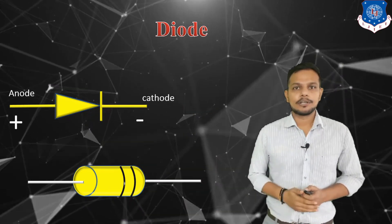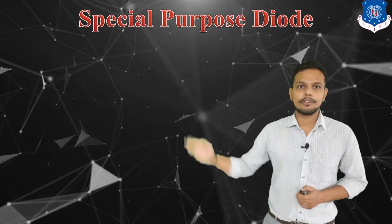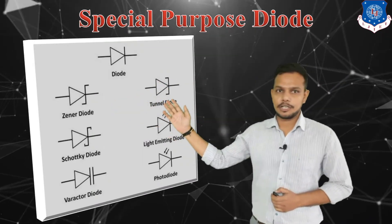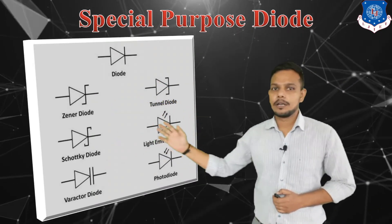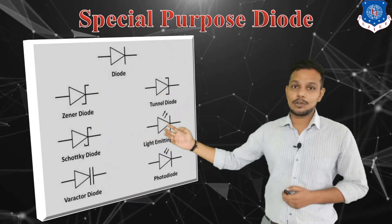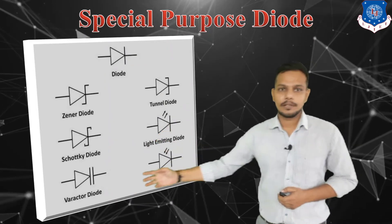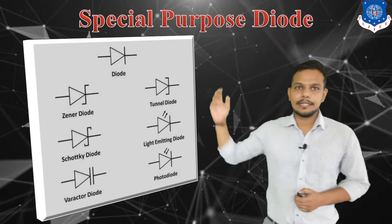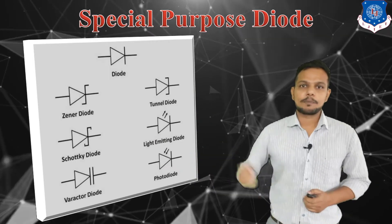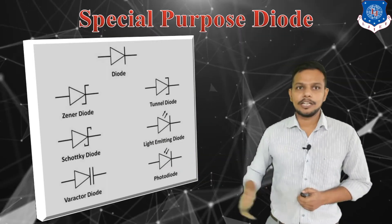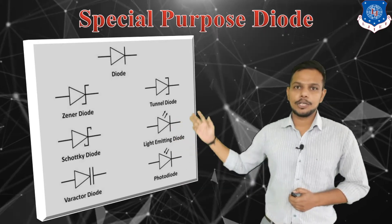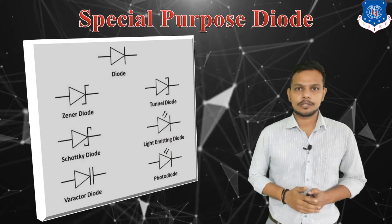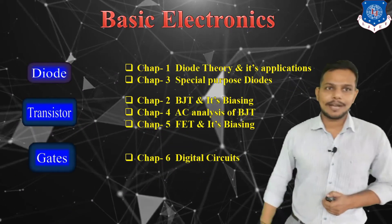Here we can see the special purpose diodes, which are Zener diode, tunnel diode, Schottky diode, light emitting diode which emits light and is also known as LED, varactor diode, and photo diode. These are the special purpose diodes which have special applications. In chapter number three we are going to discuss about the working principle and construction of special purpose diodes.